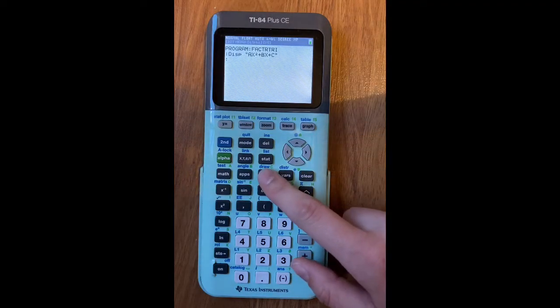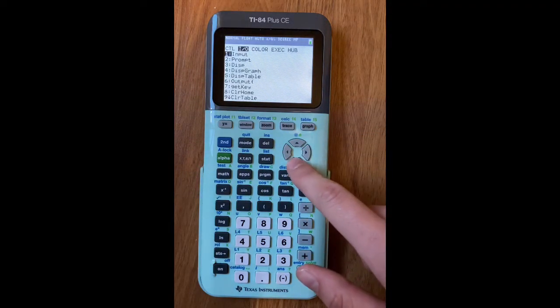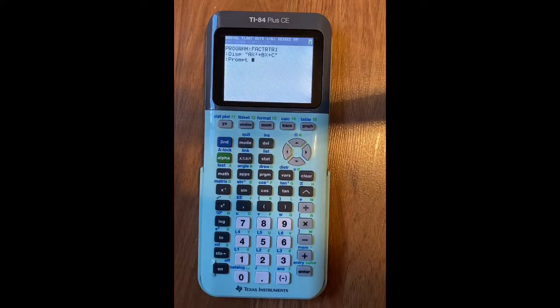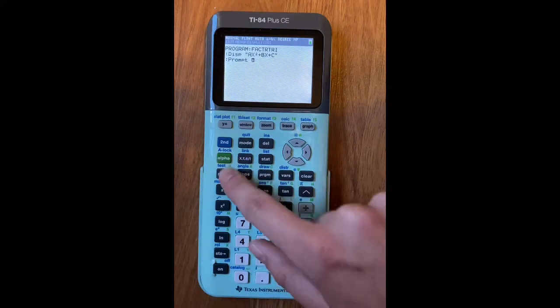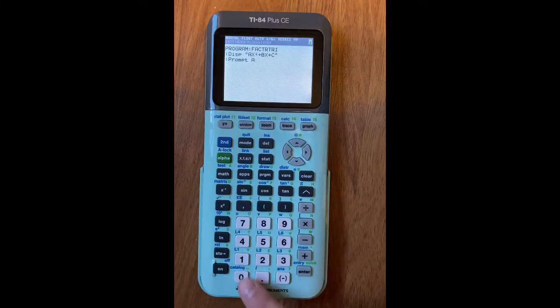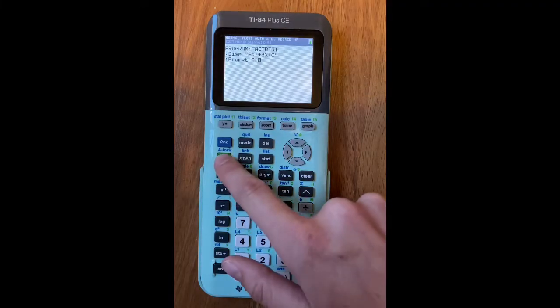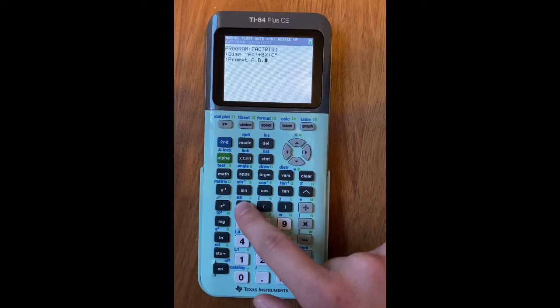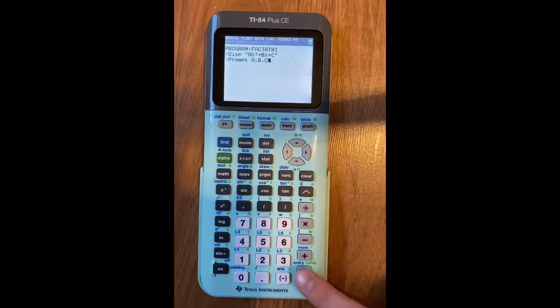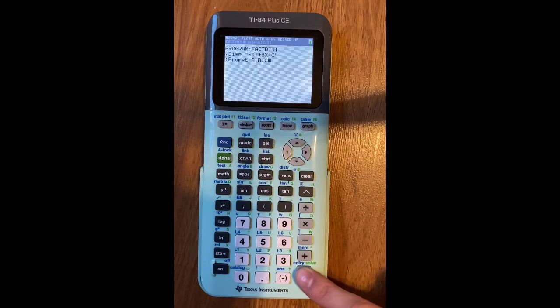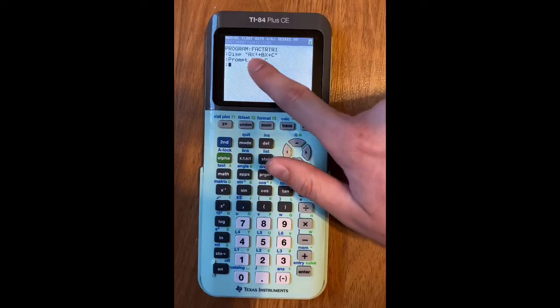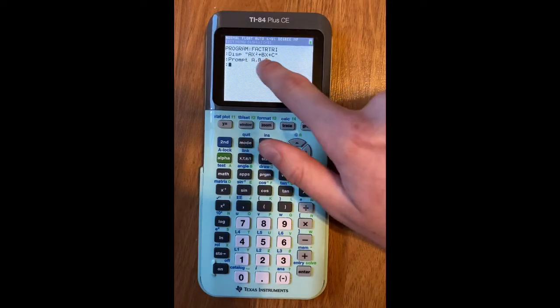Then you're going to press program, go over once, and down to the second option, which is prompt. Press enter. Then you're going to do A, comma, B, comma, C. That will prompt you with A, B, and C, like the A, B, and C that are in this first equation.